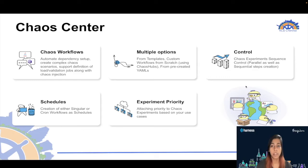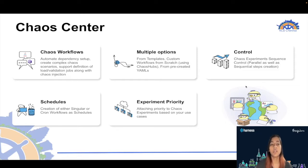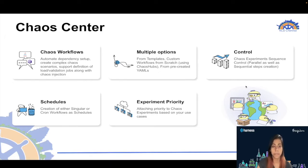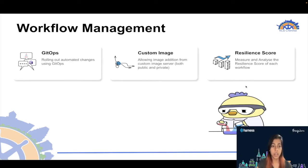Chaos workflows can be created using custom templates you upload, or you can create your own from the Chaos Hub — a repository where all the chaos experiments are present. You can choose from there, or use pre-created YAML files. You can schedule workflows as recurring cron workflows or as a singular workflow, and you can attach priority to each experiment according to your requirements.